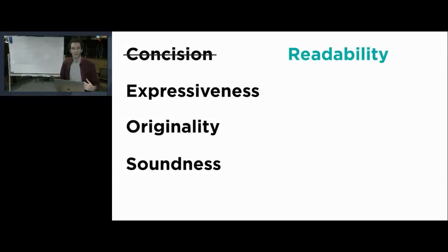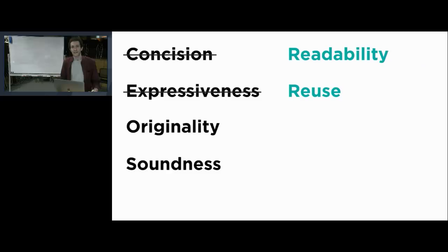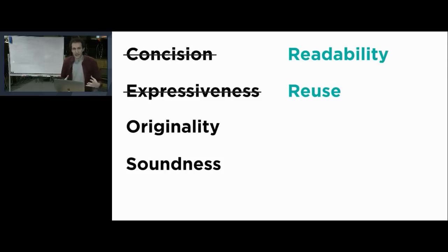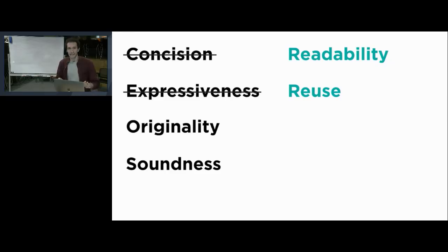Same goes for expressiveness. Many languages are proud of being expressive, but this is not a goal for Kotlin. What we actually care about is how much we can reuse the code that we write in Kotlin. We need abstraction mechanisms that bring expressivity, but what we actually care about is enabling you to take some repeating concept or pattern in your code and abstract it into a library. This is why we have some degree of expressivity, and what we care about is code reuse.